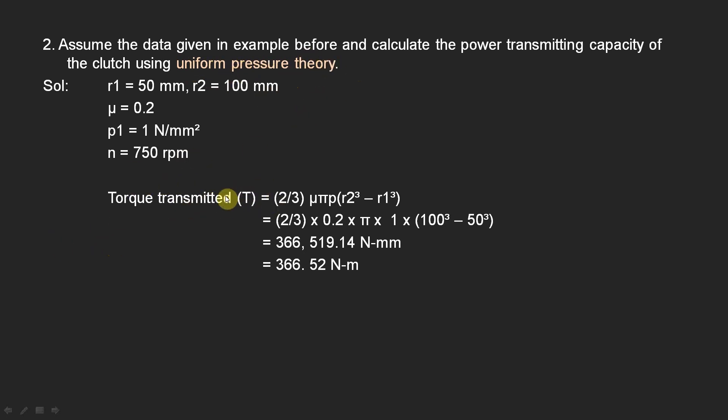So in uniform pressure theory, torque transmitted formula is (2/3) μπp (r2³ - r1³). μ is 0.2 and p is 1, r2 is 100 and r1 is 50. Substituting this, we will get a value of 366.52 Newton meters.